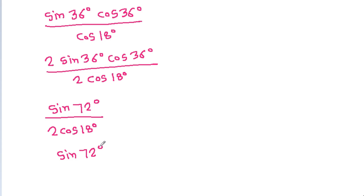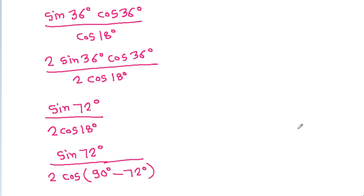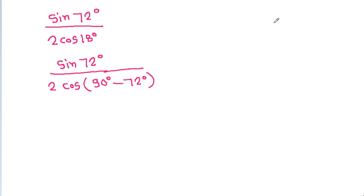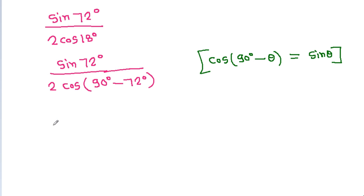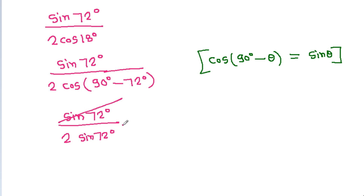Now, cos 18 degrees equals cos(90 minus 72) degrees, and since cos(90 minus θ) equals sin θ, we get cos 18 degrees equals sin 72 degrees. Therefore the expression becomes sin 72 degrees divided by 2 times sin 72 degrees, and sin 72 degrees cancels out, giving us the final answer of 1/2.